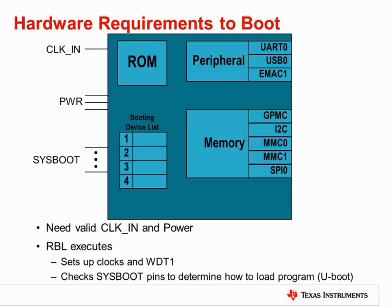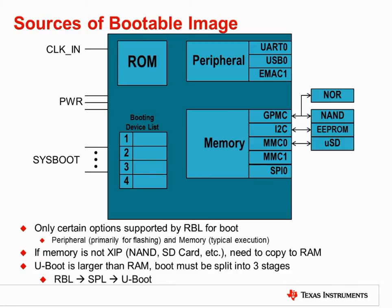Once the RBL has completed this basic configuration, it will proceed to boot the next program in the chain, which is either an SPL or uBoot. Since the ROM bootloader is programmed at the factory, there are a fixed set of boot options supported at this stage. A few of the peripherals — the UART, USB, and Ethernet port — may be used to boot an image. This functionality is primarily provided for in-circuit programming. Typically in a finished product, the device will be configured to boot from non-volatile memory upon reset.